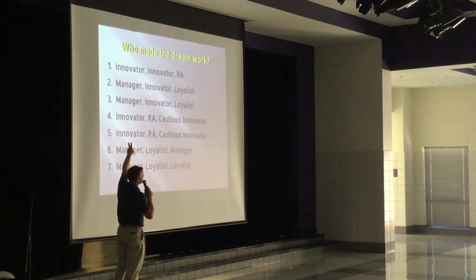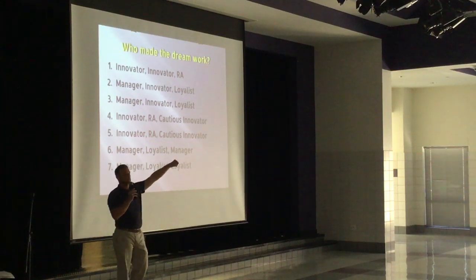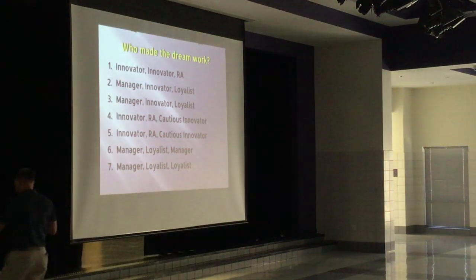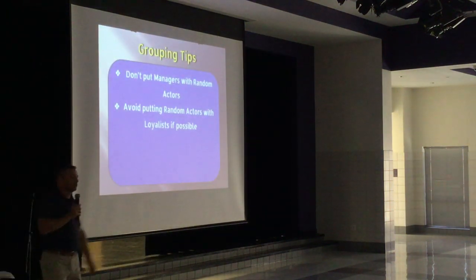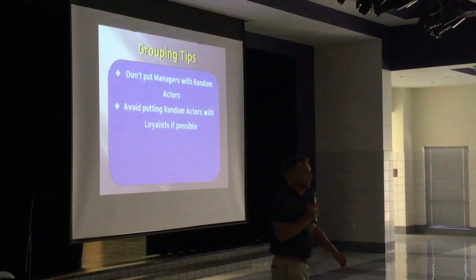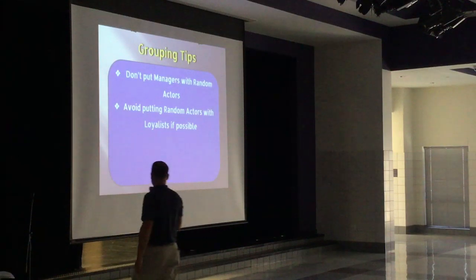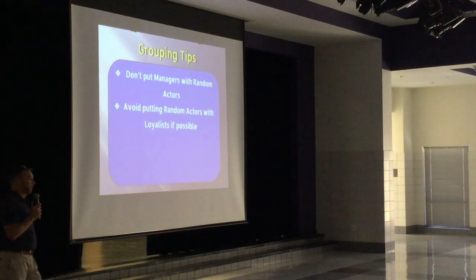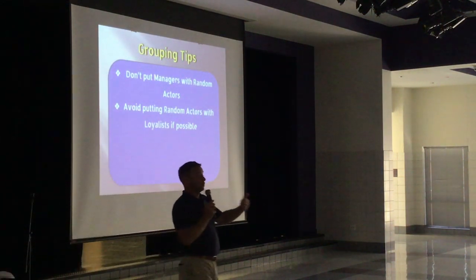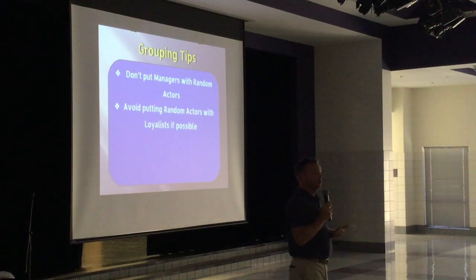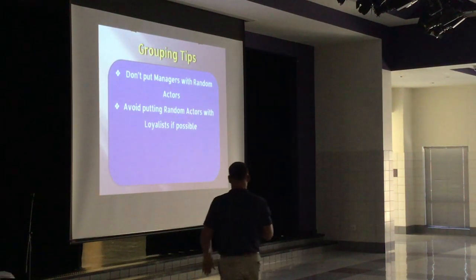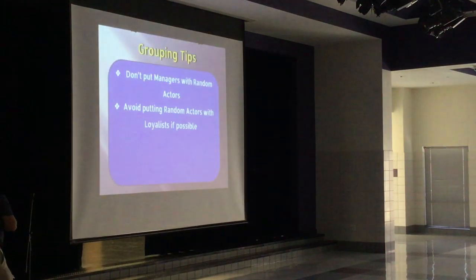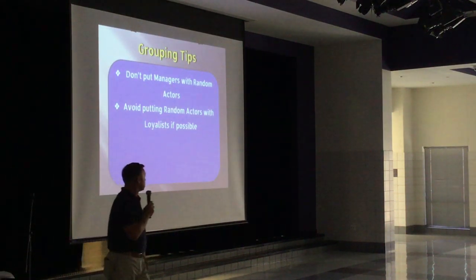I would say the most efficient groups are two and three, because the innovator comes up with the idea, the manager thinks of how they're going to do it, and the loyalist gets to work on it. So think about that in your grouping. Do not put managers with random actors — that's number one, that's a safety issue. You're actually putting that student at risk. And if you can, avoid putting random actors with loyalists, because loyalists are gullible — they're going to go along with whatever's happening, kind of like that hope follower we showed you. Those are the biggest keys.